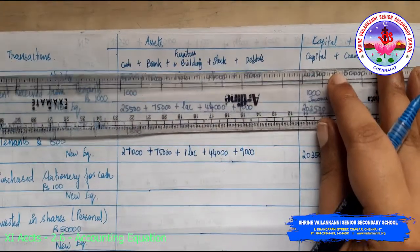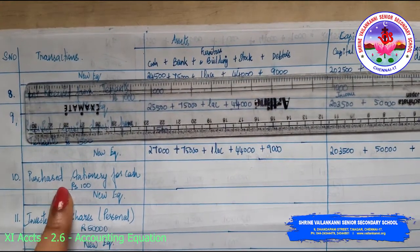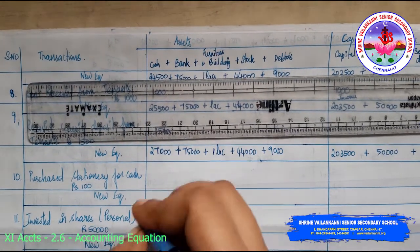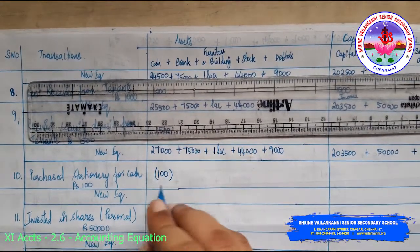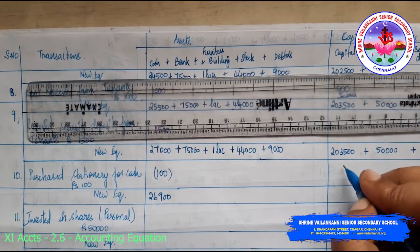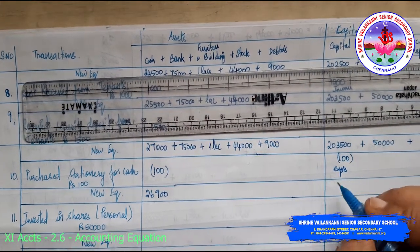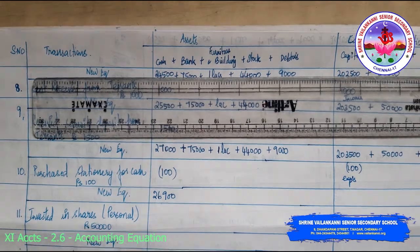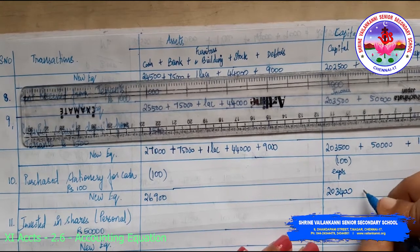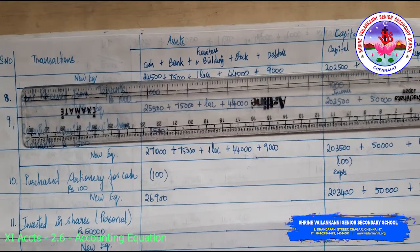Tenth transaction: purchased stationery for cash rupees 100. It's an expense — cash goes out so cash reduces to 26,900. Since it is an expense it will reduce my capital also. New equation: 2 lakh 3,400 capital plus 50,000 creditors plus 1,500 security deposit. Bank 75,000, furniture and building 1 lakh, stock 44,000, debtors 9,000.